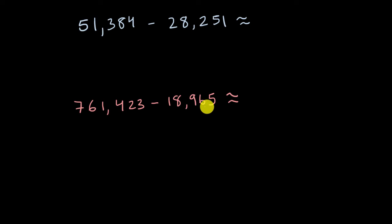So we have two subtraction problems here that I want you to estimate. I first want you to estimate what 51,384 minus 28,251 is, and then I want you to estimate what 761,423 minus 18,965 is. And this little squiggly equal sign means approximately, so you're only creating an estimate. You don't have to do all of the detailed math here. Pause this video and see if you can figure those out.